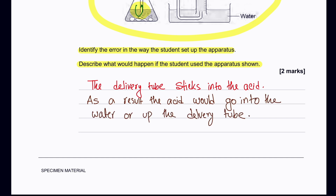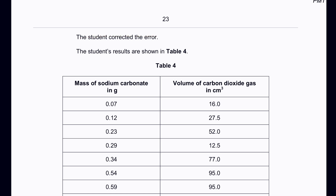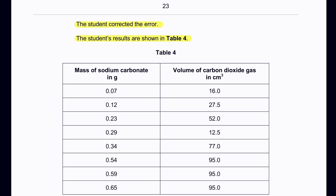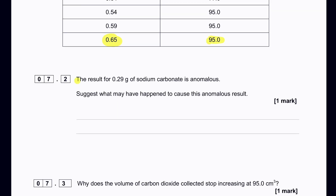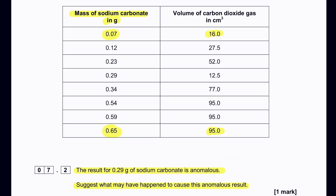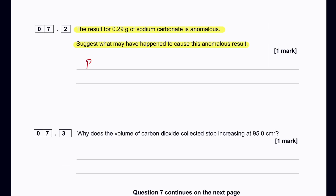The student corrected the error. Looking at table 4, masses from 0.07 g up to 0.65 g were used and volumes of CO₂ collected are recorded. The result for 0.29 g of sodium carbonate is anomalous. From 0.23 g the volume is 52 cm³ and from 0.34 g it is 77 cm³, so 0.29 g should give a volume in between — but instead it shows a very small volume.